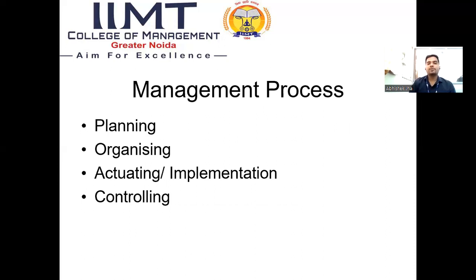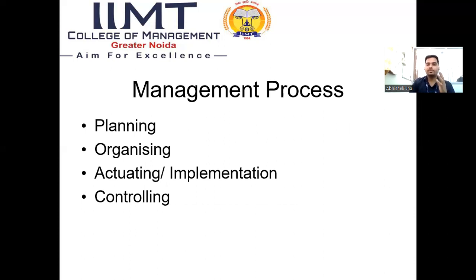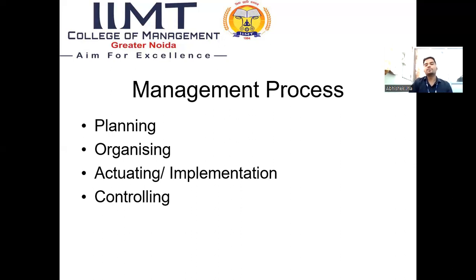If we talk about the management process, management has varied processes — like planning, and planning is never-ending. The management hierarchy is divided into three parts: top level, middle level, and lower level. The main task of the top level is to make plans, and to implement those plans comes under the purview of the middle level, while to execute and work on that plan is the work of the lower level. So first point is planning.